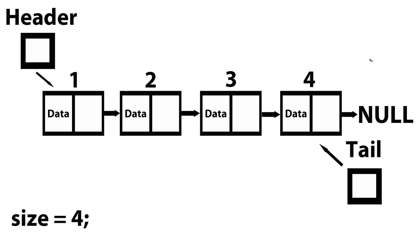Now let's take a look at case two, which is what happens if the user wants to insert at the end of our list. All we need to do is compare to size plus one — in this case that gives us five. If the user passes in position five, all we're going to do is call the append method.